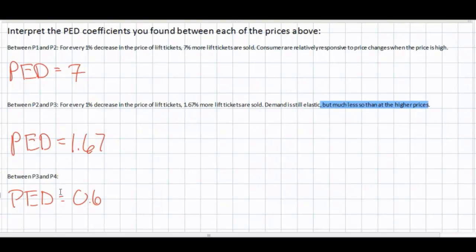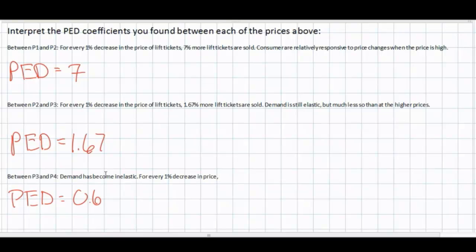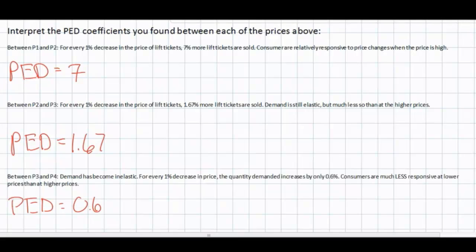Finally, between 30 francs and 10 francs, demand has become inelastic because the coefficient is now less than 1. For every 1% decrease in price, the quantity demanded only increases by 0.6%. Therefore, we can conclude that at lower prices, consumers of ski lift tickets in Switzerland are much less responsive to price changes than they are at higher prices.